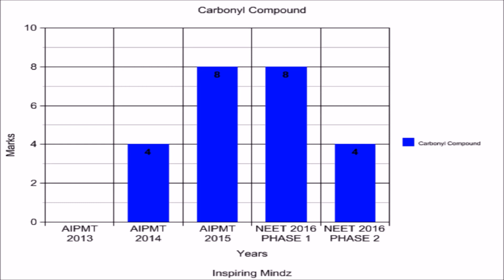Chemistry in Everyday Life has a weightage of 8 marks in AIPMT 2013, AIPMT 2015, and NEET 2016 phase 1. The weightage reduced to 4 marks in AIPMT 2014. In NEET 2016 phase 2, no questions were asked from this chapter.